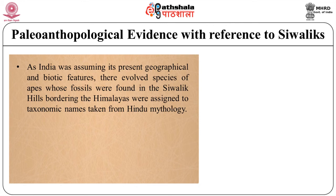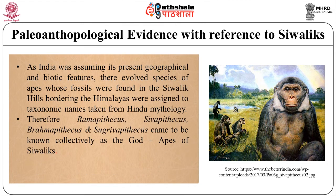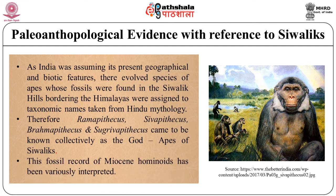Scientists who studied the Siwalik ape fossils assigned some species to fanciful taxonomic names taken from Hindu mythology. Thus Ramapithecus, Sivapithecus, Brahmapihtecus, and Sugrivapithecus came to be known collectively as the 'god apes of the Siwalik.' During the course of the past century and a half, this fossil record of Miocene hominoids has been variously interpreted, with a major question being the evolutionary affinity of the god apes to the earliest members of our taxonomic family Hominidae.